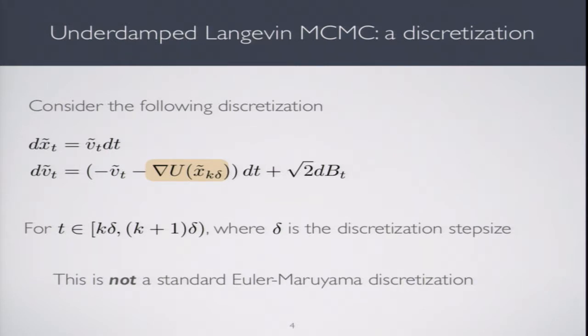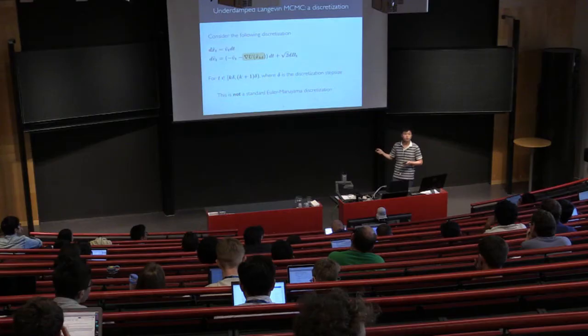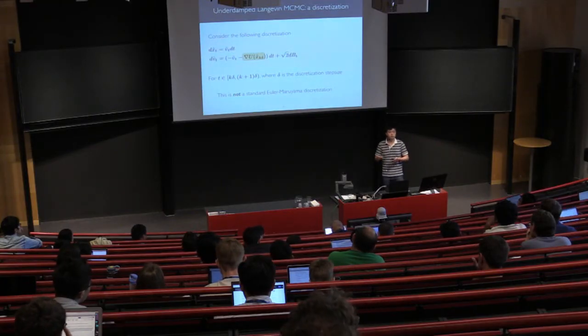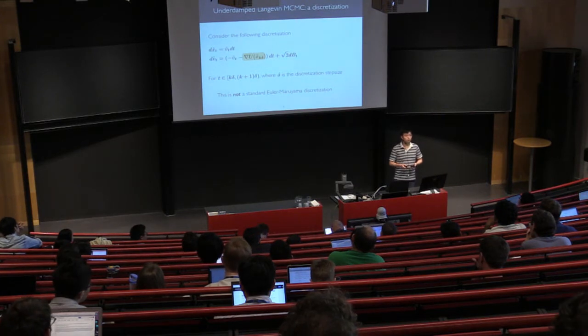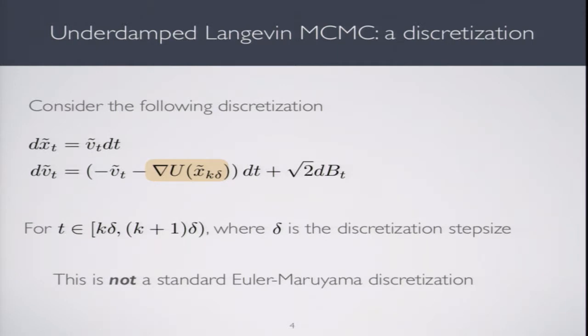I'd like to stress two things. This discretization is not exactly the naive Euler discretization. If it were naive Euler, we'd have v of k·δ here instead of v_t. This fact is quite important because the rate is considerably slower with naive Euler. The other thing to note is this discretization is exactly implementable algorithmically in time essentially the same as computing the gradient of u. So it's fast.